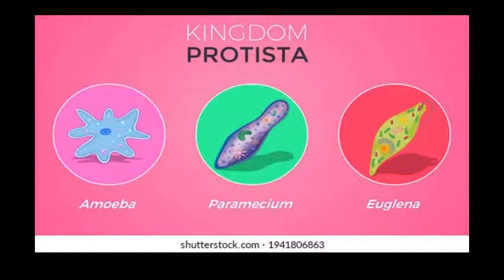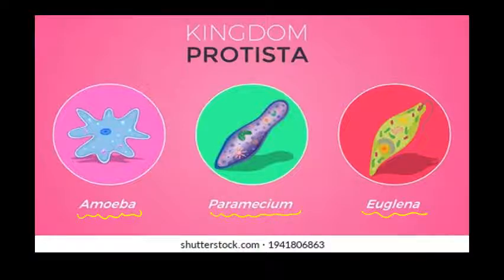Some examples of organisms which belong to Kingdom Protista are amoeba, paramecium, and euglena. These are some of the common organisms present in Kingdom Protista.